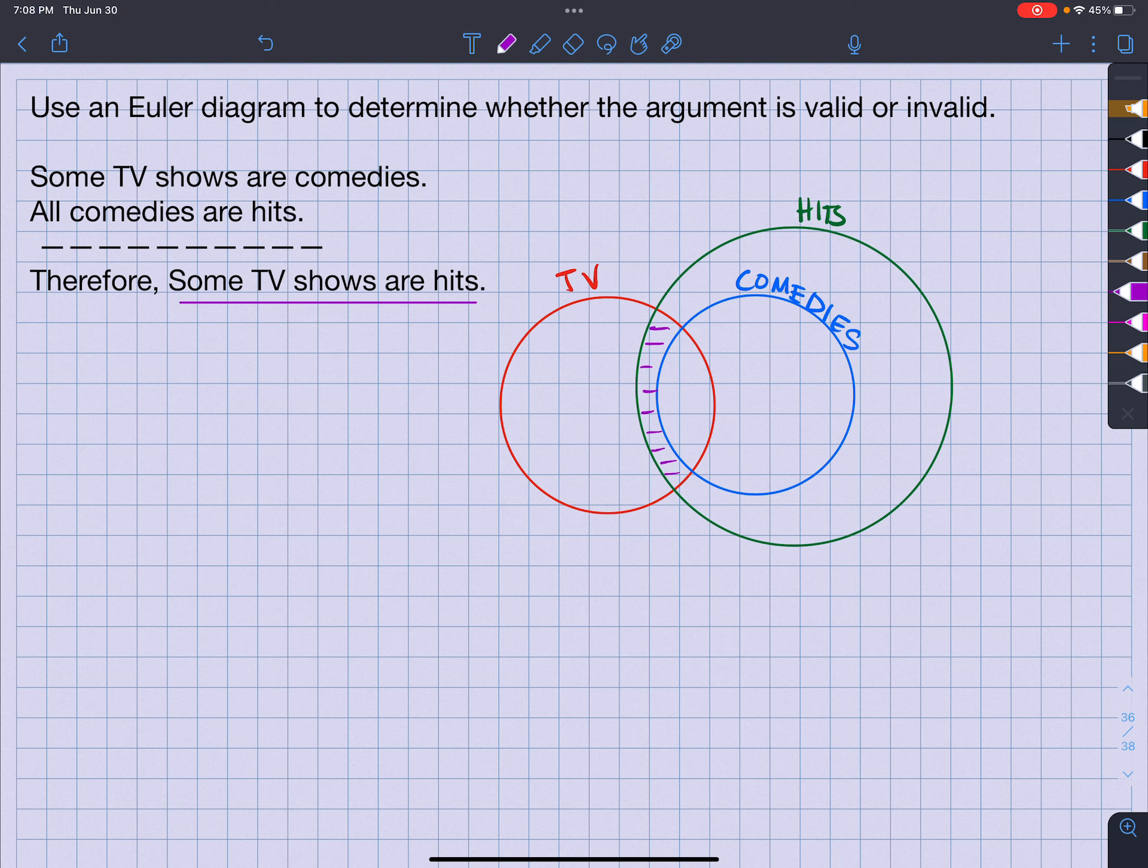So, therefore, this is going to be valid. I cannot draw those circles any other way to make it invalid. And I always want to try to prove that it's invalid. But there's no way of doing that here. So, therefore, this statement is valid. This argument is valid.